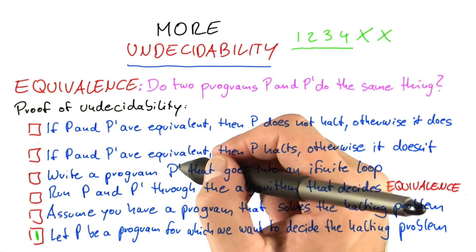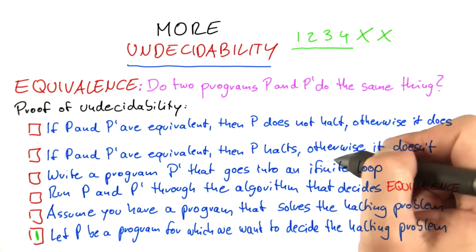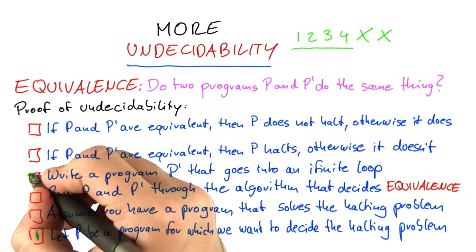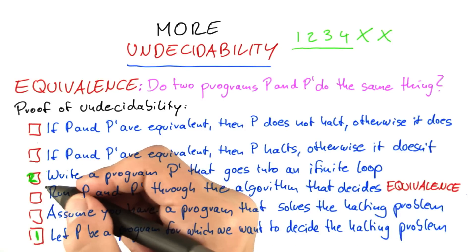Then we add a second program, and that program is called p' and it goes into an infinite loop. So no matter what input, this program is just programmed to always go into an infinite loop.